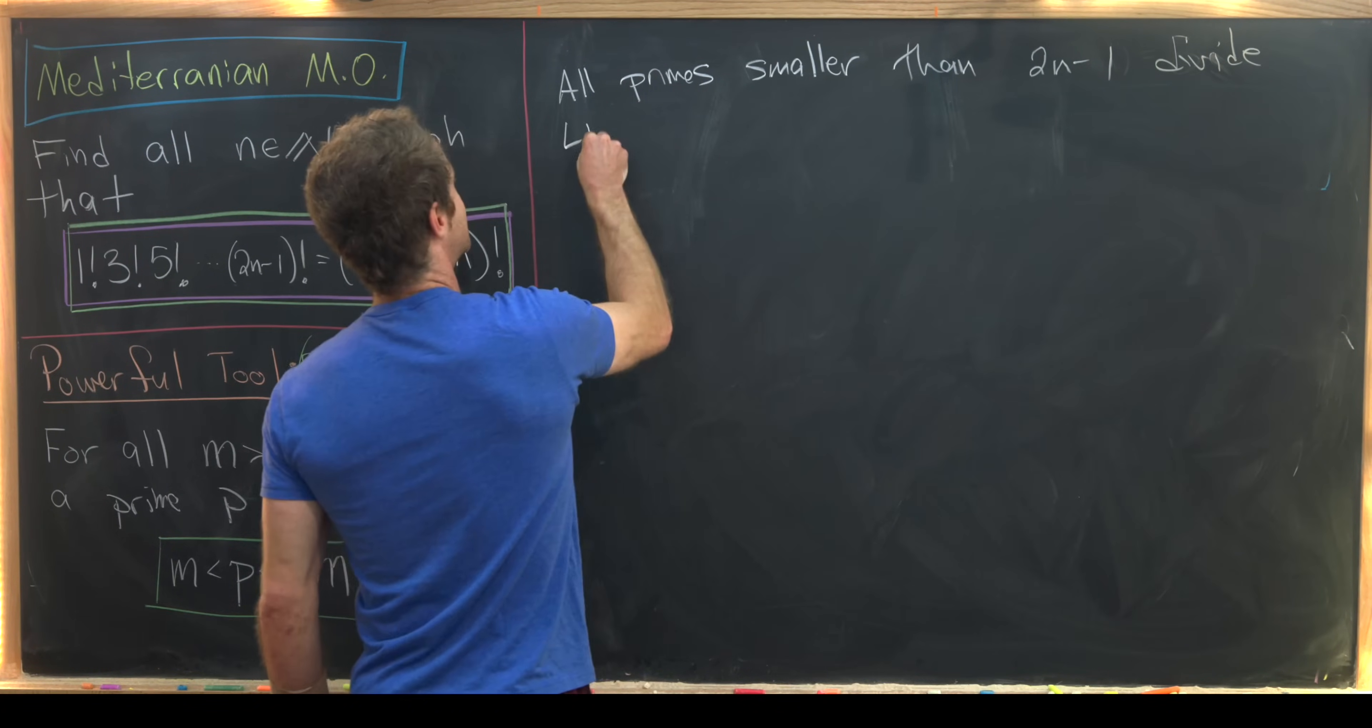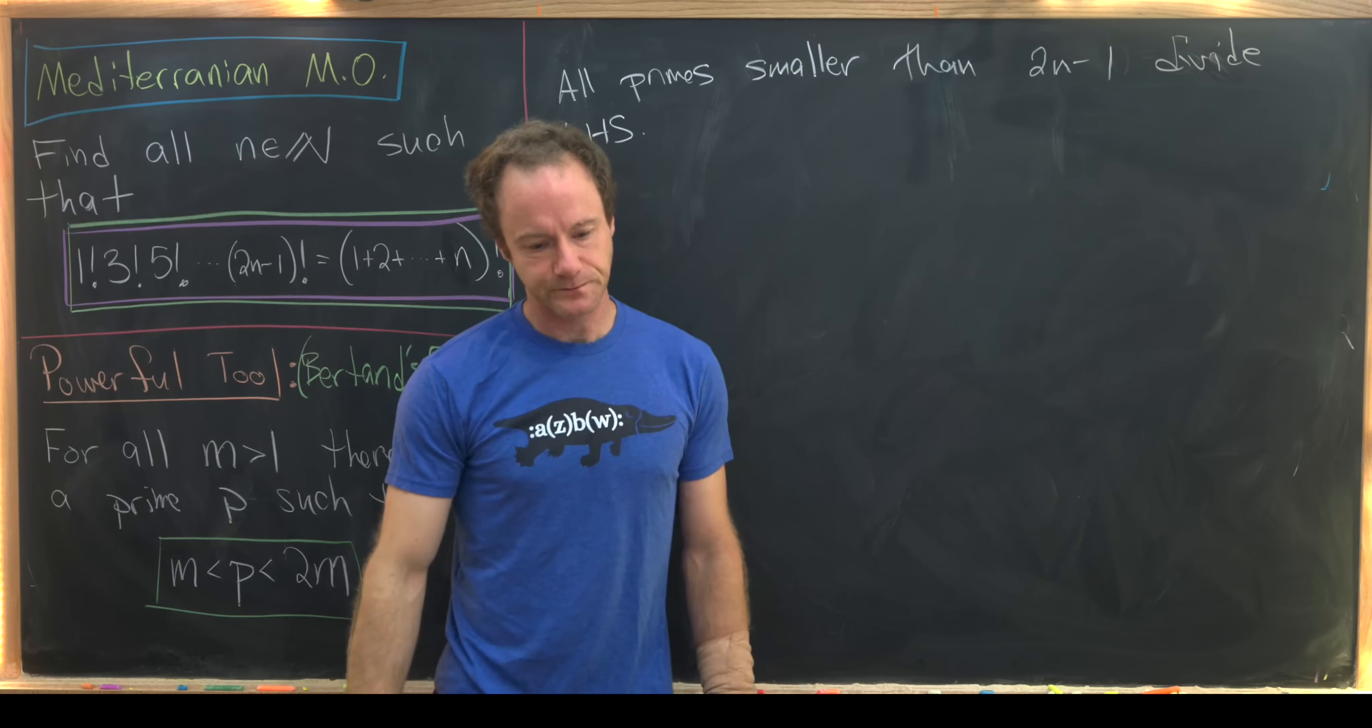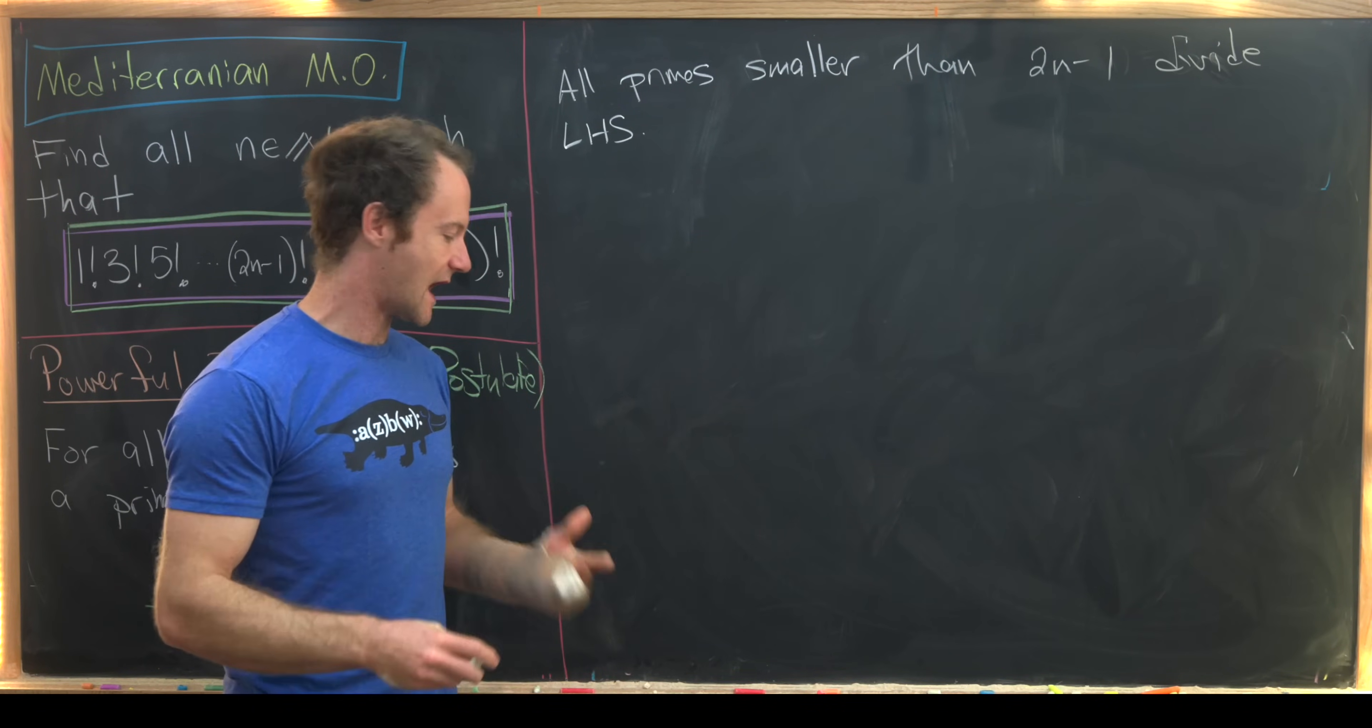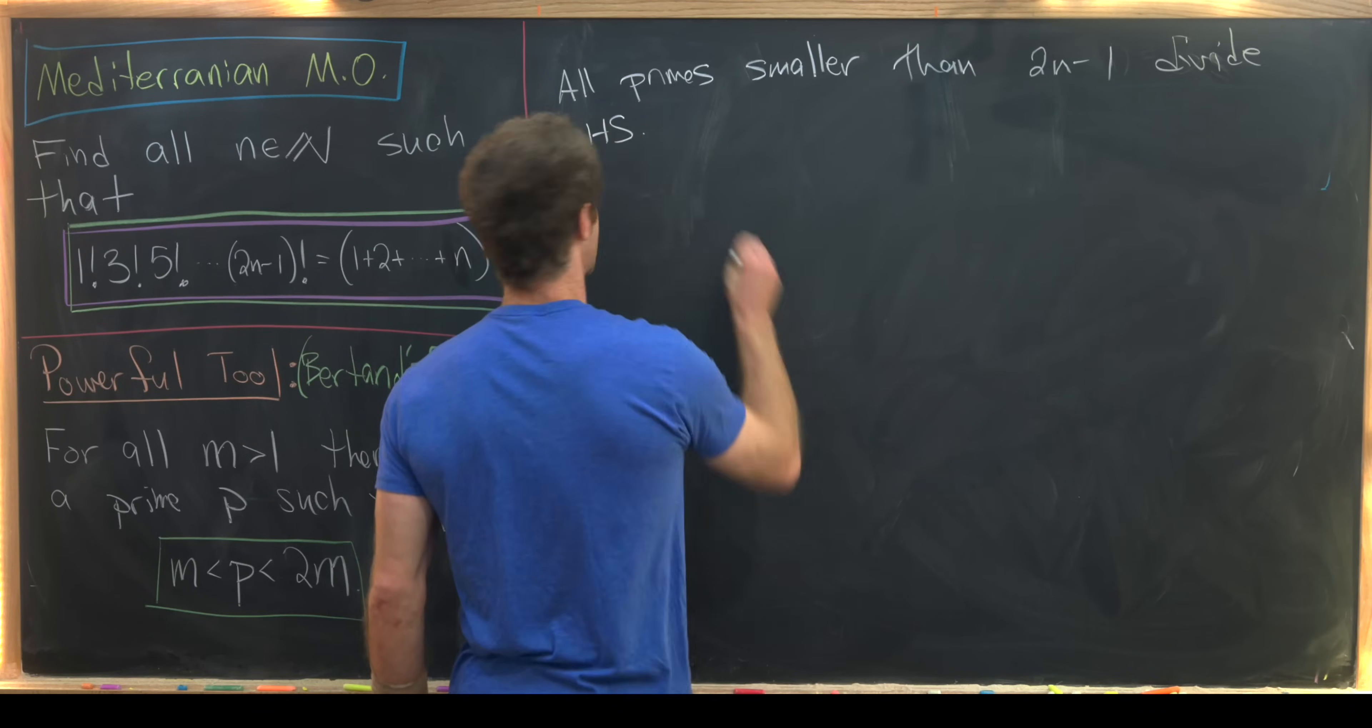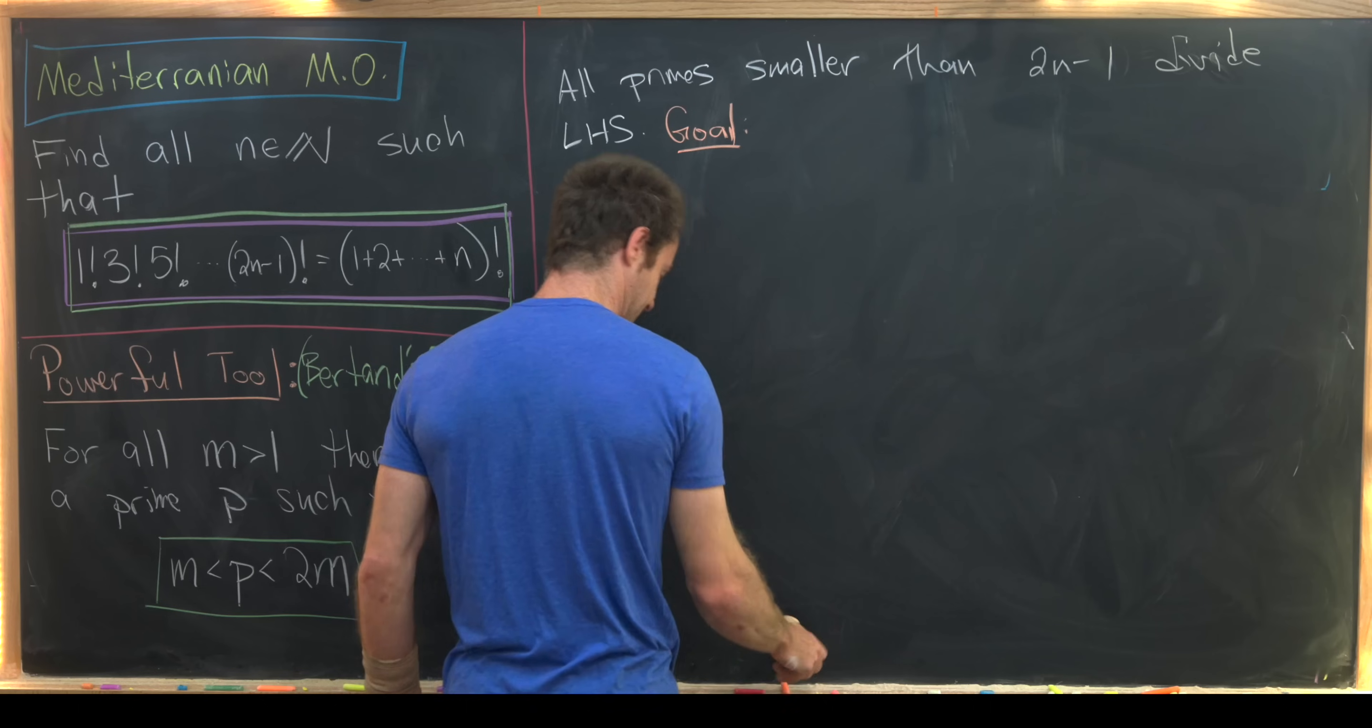All primes smaller or equal divide the left-hand side of our would-be equation. Okay, so our goal is to somehow construct a prime that divides the right-hand side but not the left-hand side.